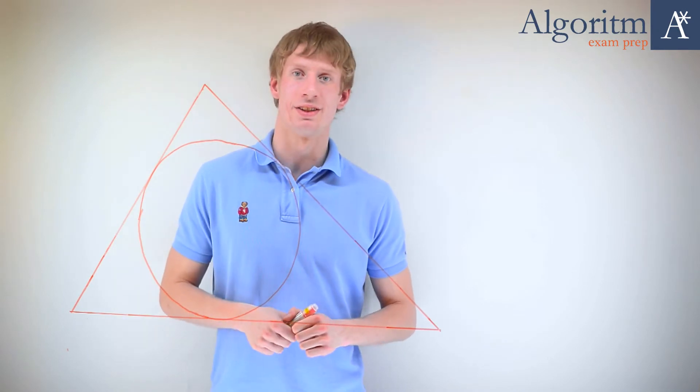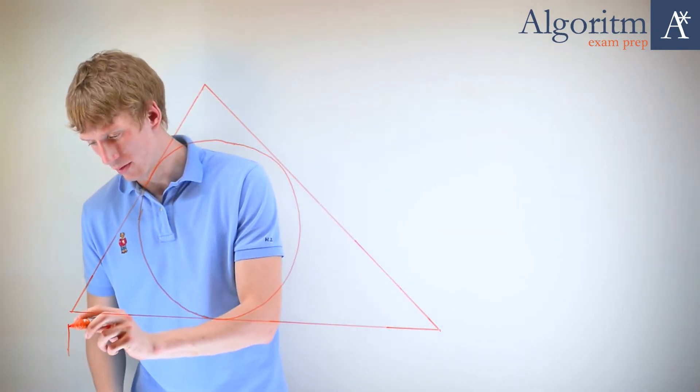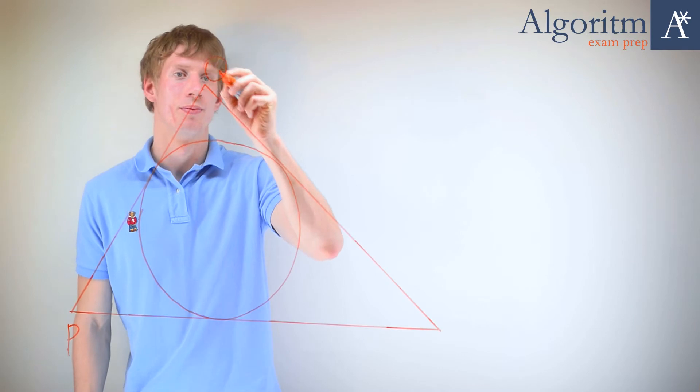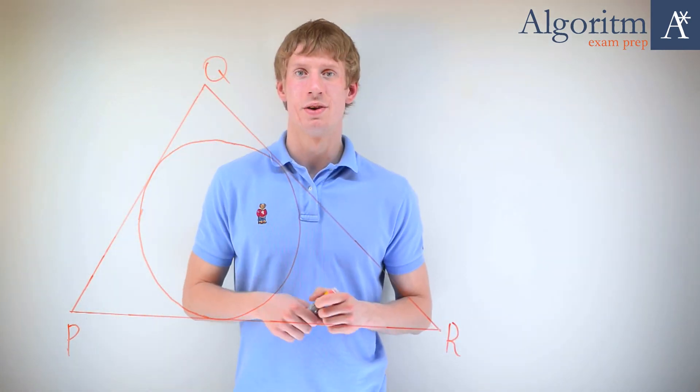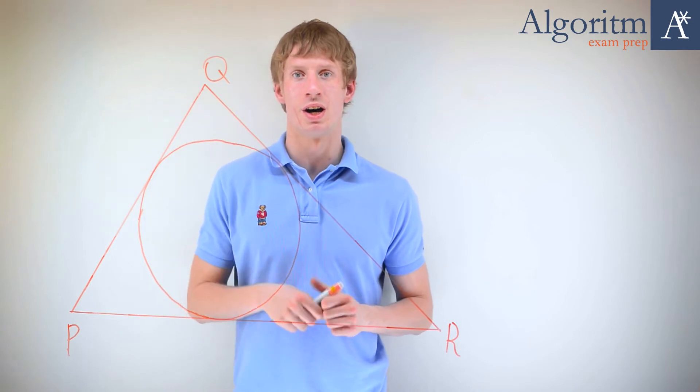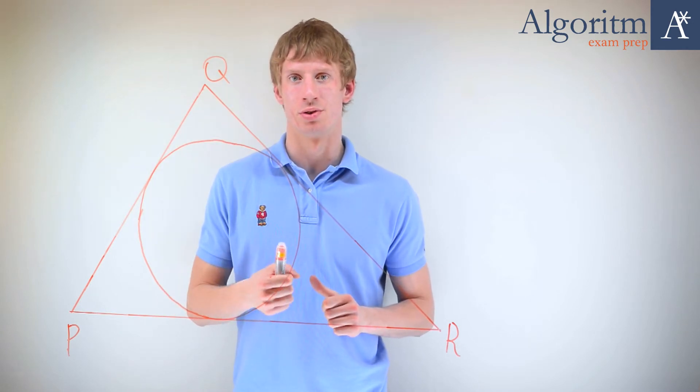Now let's consider one simple geometry problem. Here you may see triangle PQR. The sides of triangle PQR are the tangents to the circle.